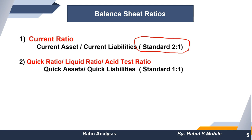The second ratio is the liquidity ratio, also called quick ratio, liquid ratio, or acid test ratio — it shows the liquid position of the company. The formula is quick assets divided by quick liabilities. Its standard is 1:1. These are important points to remember.